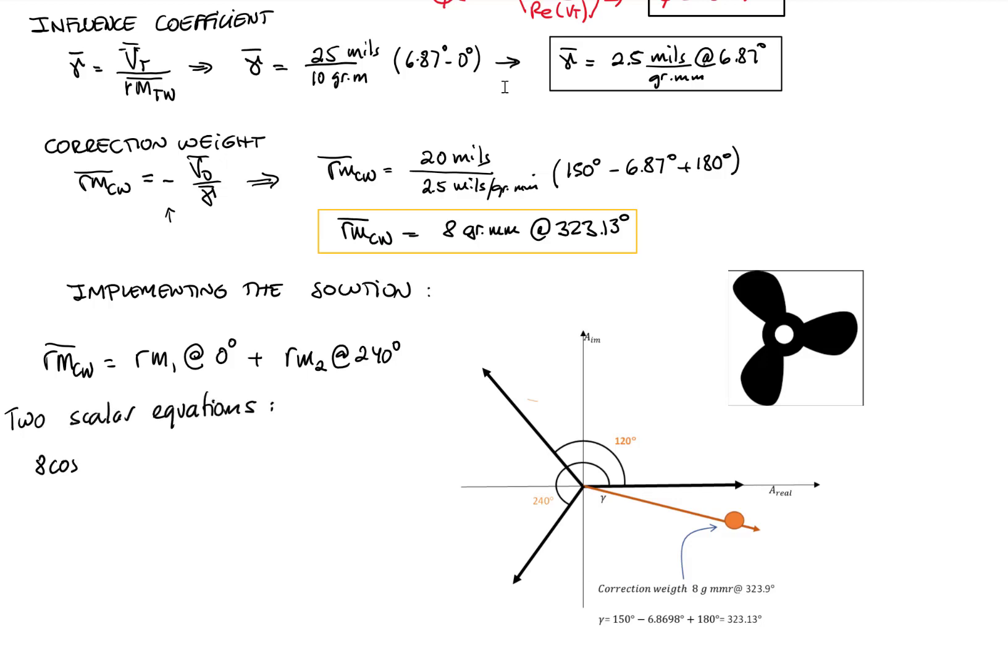This is a vector equation that we can decompose as two scalar equations. It would be 8 cosine of 323.13 equals my first mass cosine of 0 and my second mass cosine of 240.